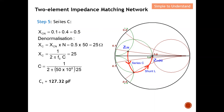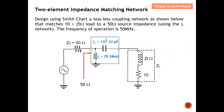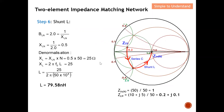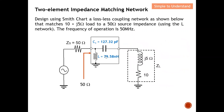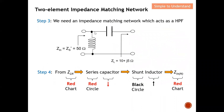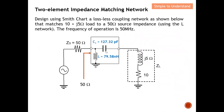Putting everything together, this is the final impedance matching network configured as a high pass filter. The series capacitor is 127.32 picofarads and the shunt inductor is 79.58 nanohenries. Inserting these two elements into the network means that looking in from the source, we see Z_in equals 50 ohm. With this, I'd like to stop my discussion. Thank you so much for your strong support — I hope to see you guys soon. Bye for now.